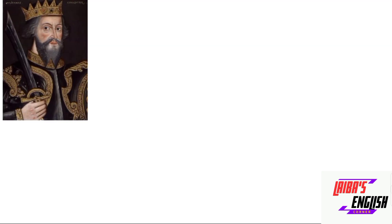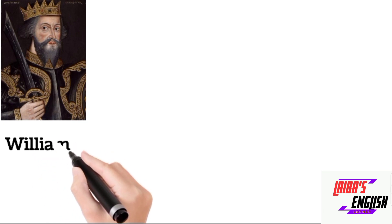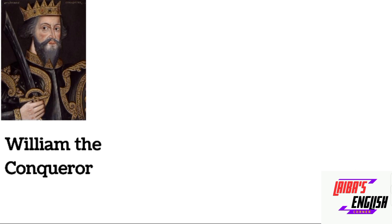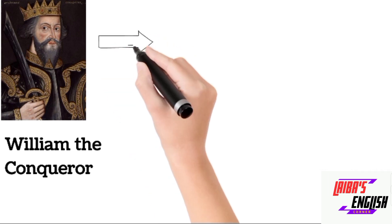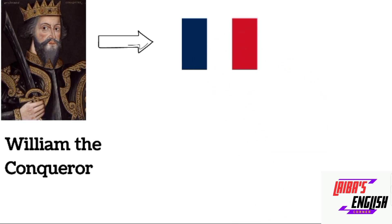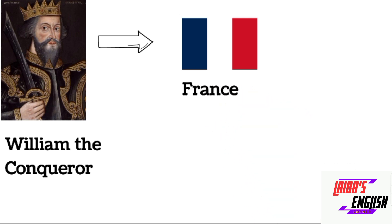This was a time when there were a lot of changes. A person named William the Conqueror was the leader of the Normans who invaded England in 1066. William the Conqueror belonged to a country known as France. The people of France came to England, invaded the country, and ruled there for many hundreds of years.